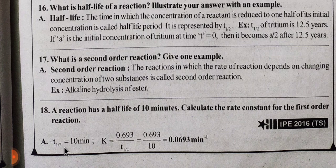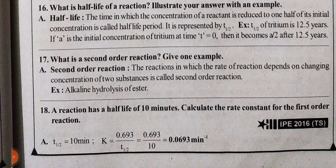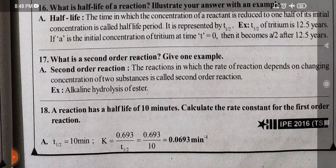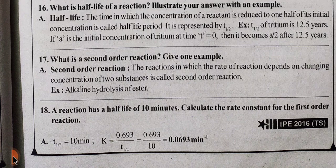The second half-life formula is K = 0.693/T½. The T½ value is 10 minutes. So if you found 100% value in this video, please like, comment, share, and subscribe to your friends. Thank you for watching.